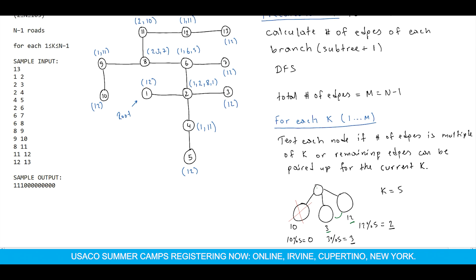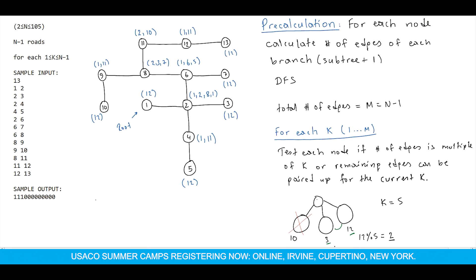Let's try k equal to 3. Starting from node 1, it has only 1 branch with 12 edges. 12 mod 3 = 0, so node 1 is okay. For node 2, we have branches of 1, 2, 8, and 1. The values 1 and 2 can be paired up since 1 plus 2 = 3. For the branch with 8 edges, 8 mod 3 = 2, so the remainder is 2. And for the branch with 1 edge, 2 plus 1 = 3, so they can be paired. Node 2 is okay. Node 3 is already a multiple of k with 12 edges. For node 4 with branches 1 and 11, the remainder of 11 mod 3 = 2, so 1 and 2 can be paired up.